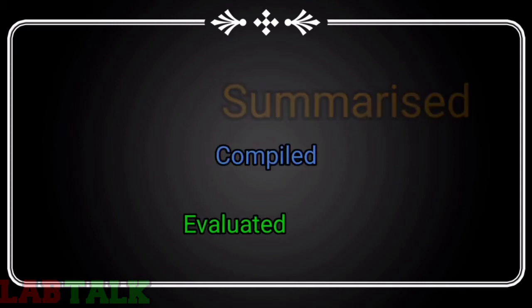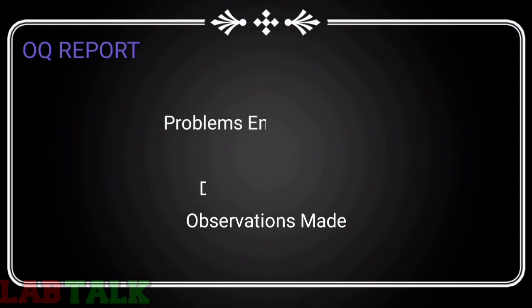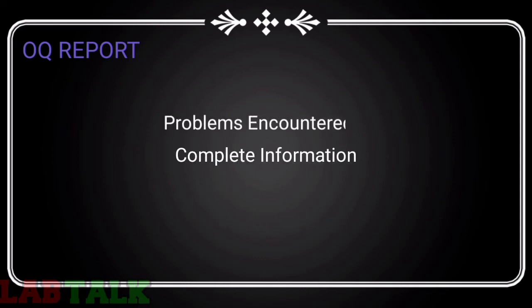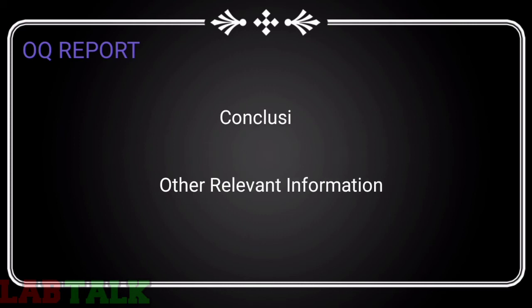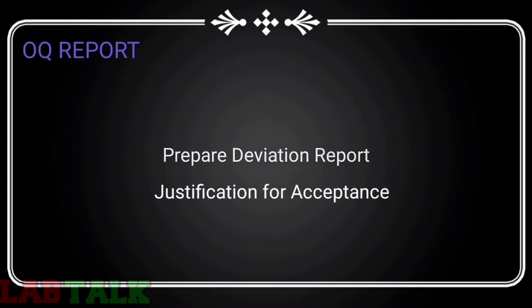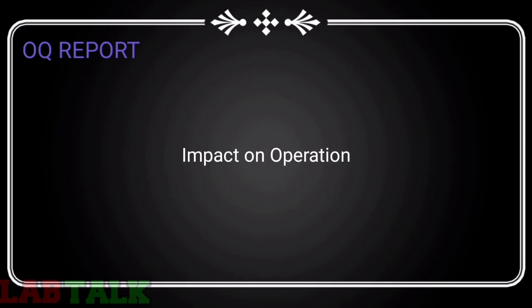After completion of OQ, the results are summarized, evaluated, and compiled in an OQ report. The report should include: date study initiated, date completed, observations made, problems encountered, completeness of information collected, summary of deviation reports, results of controls and alarm tests, sample data if appropriate, location of original data, other relevant information, and conclusions on the validity of the equipment and system operations. Prepare a deviation report including justification of acceptance and impact on the operation; all deviations and measures taken to eliminate them should be documented.